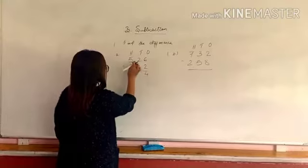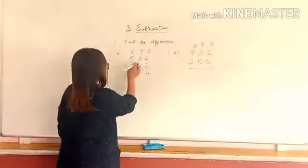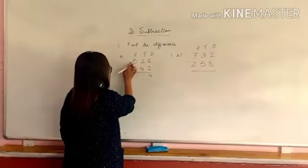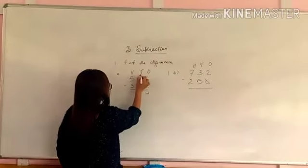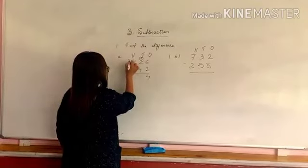Write in the same place. 2 minus 4, can you subtract? No. Why? Because 2 is smaller than 4. In that case, what we have to do, we will borrow from 100's place. Borrow, this one will become 12 and 5 will become 4.